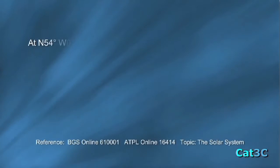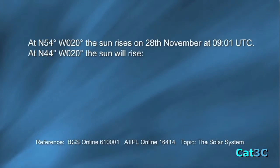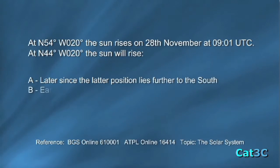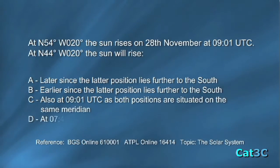At north 54 degrees, west 20 degrees, the sun rises on the 28th of November at 0901 UTC. At north 44, west 20, the sun will rise at which time? A. Later, since the latter position lies further to the south. B. Earlier, since the latter position lies further to the south. C. Also at 0901 UTC, as both positions are situated on the same meridian. Or D. At 0741 local mean time.